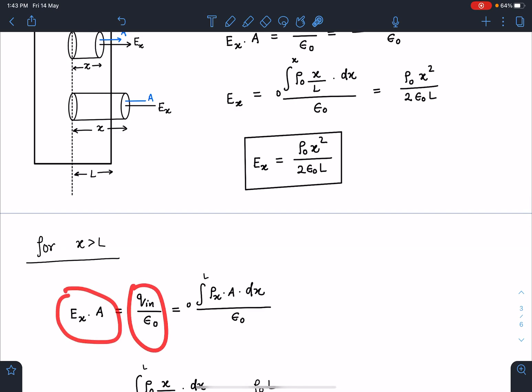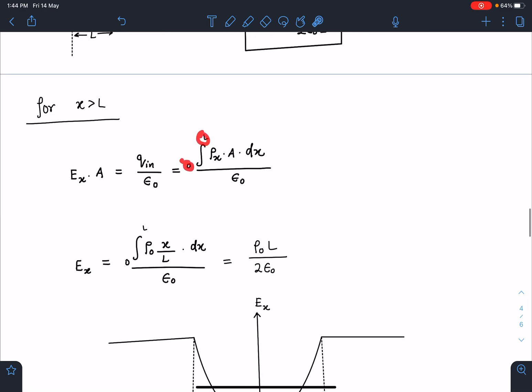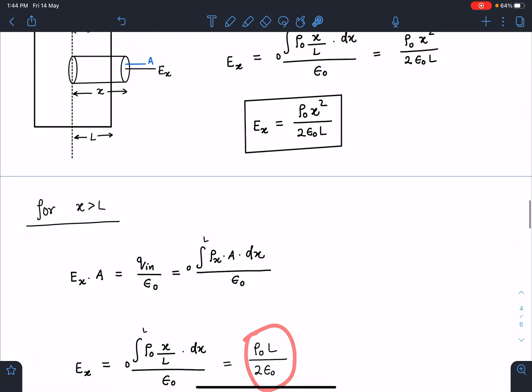E_x·A = Q_in/ε_0 = ∫ρ dV. But this time the limit of x will go up till L only because charge is present till this point, so 0 to L. When I substitute and simplify, I get the field as E_x = ρ_0 L/(2ε_0). You can check that field is continuous at x = L.